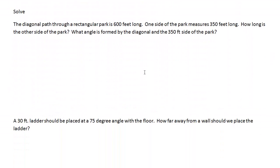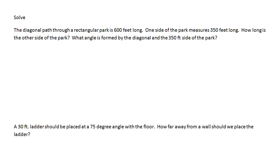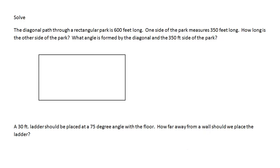First problem: the diagonal path through a rectangular park is 600 feet long, and one side is 350 feet. How long is the other side, and what angle is formed between the diagonal and the 350-foot side? Drawing a rectangle with the diagonal gives us a right triangle — the diagonal is 600 feet (hypotenuse), one leg is 350 feet, and the other leg is X.